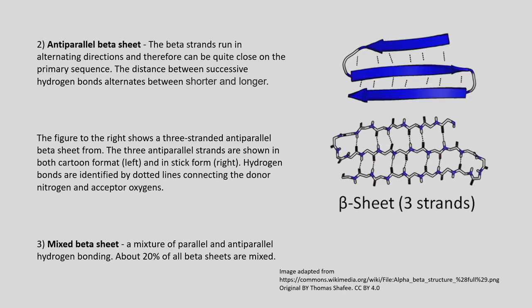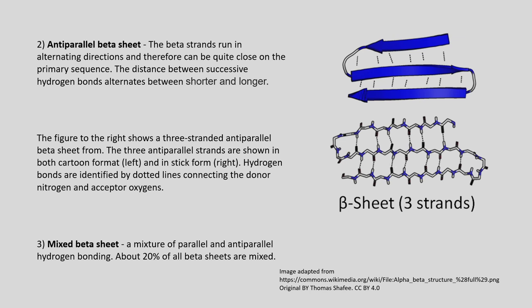In anti-parallel beta sheets the direction of the beta strands is opposite to one another, running in alternating directions and therefore can be quite close in the primary sequence. The distance between successive hydrogen bonds alternates between shorter and longer in this case. There is also a third arrangement called mixed beta sheets, which is a mixture of parallel and anti-parallel hydrogen bonding; about twenty percent of all beta sheets are found to be mixed.